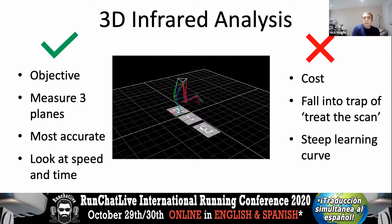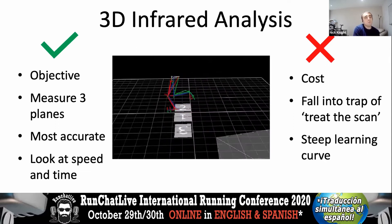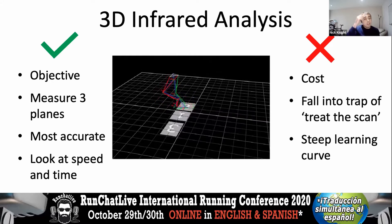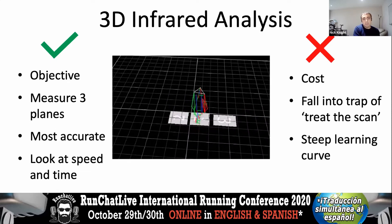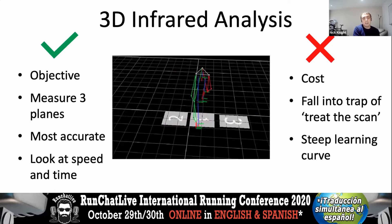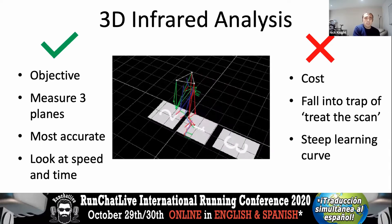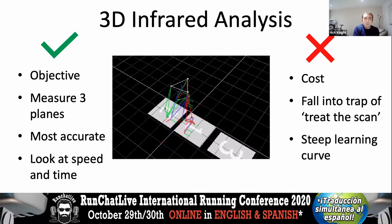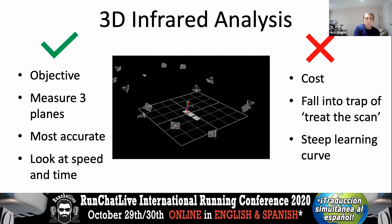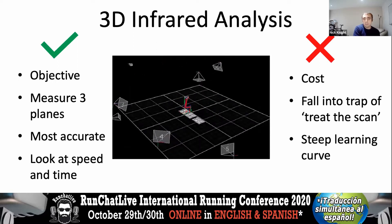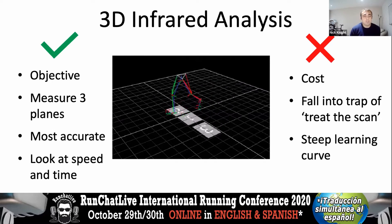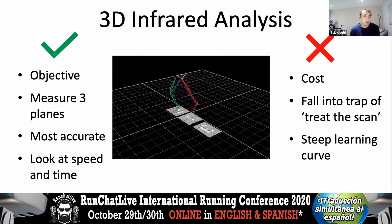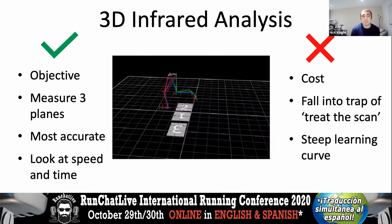There's also a steep learning curve in interpreting what the data means and relating it back in clinical terms. One thing to be wary of with shoes is that all markers tend to be stuck on the shoe rather than directly on the foot, so you're measuring what the shoe is doing rather than the foot. The way to resolve that is to cut holes in shoes and stick markers directly to the foot, but not many runners will allow that. That's why we test everyone in the same shoe — a bank of standardized shoes — to try to standardize as best we can.